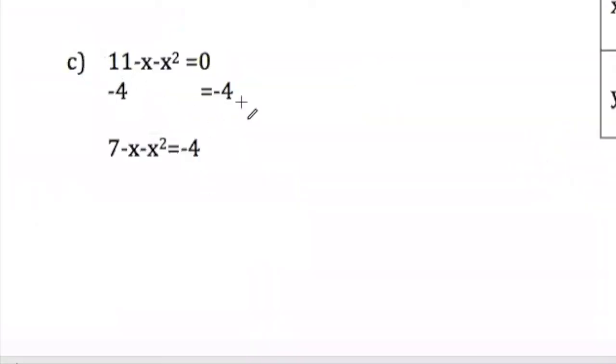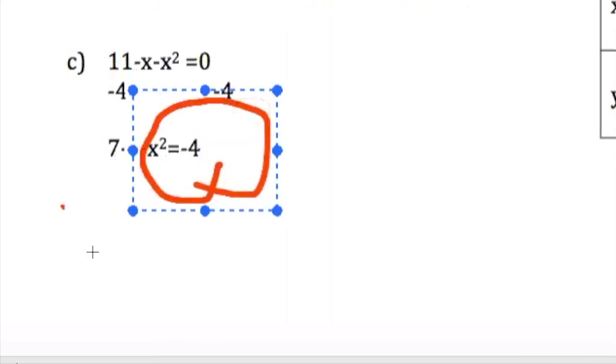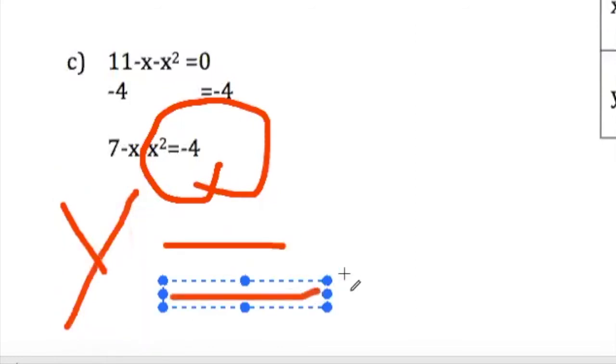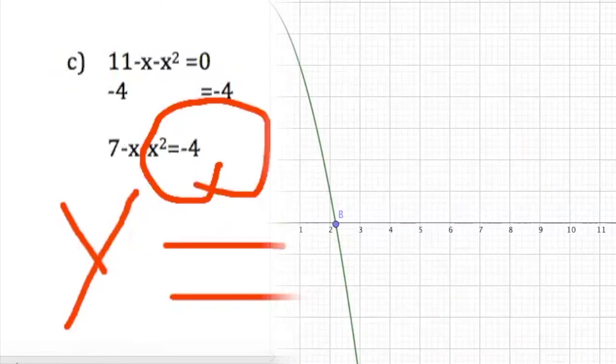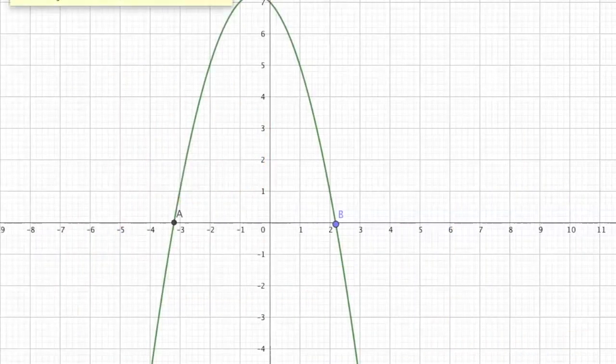So, we subtract 4 on both sides. And here, when you subtract 4, you get the 7 minus x minus x square. And now, we look like the originals. So, our focus is now on what is over the equal sign, which is y equal negative 4.